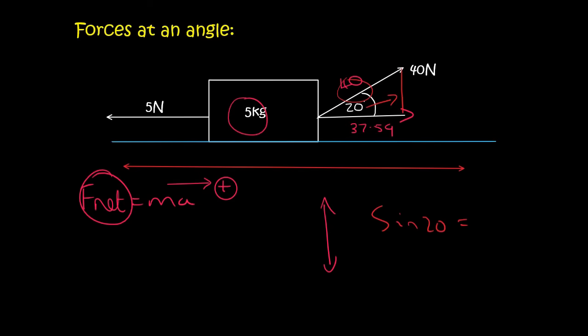So if we look at the opposite and we already have the hypotenuse well that's sin. So we can say sin 20 is equal to the opposite which I'll call y over the hypotenuse which is 40 and so y is equal to 40 times by the sin of 20 and so that's 13.68 newtons and that's going up.